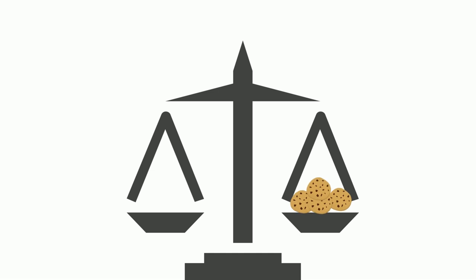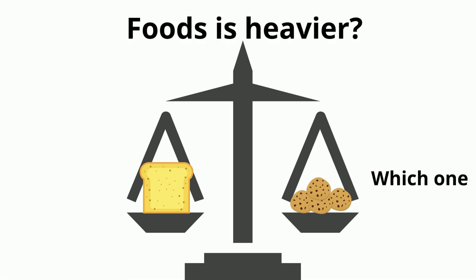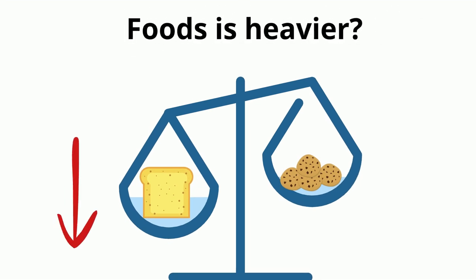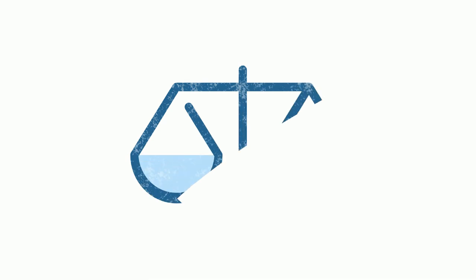Suppose if we put four cookies in the right pan of the weighing scale and a big loaf of bread in the left pan, which one of these foods is heavier? Since the left pan went downward while the right pan went upward, it means the bread is heavier than the cookies, or we can say the cookies are lighter than the bread.